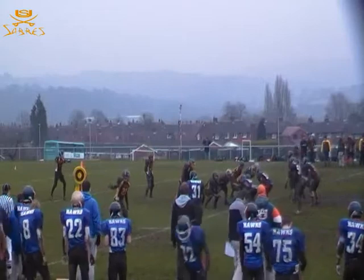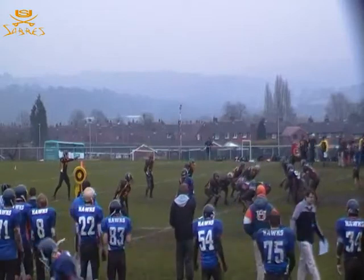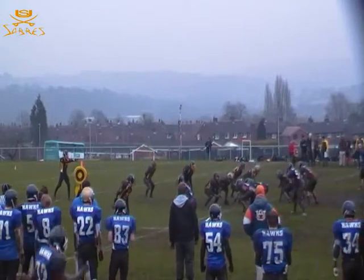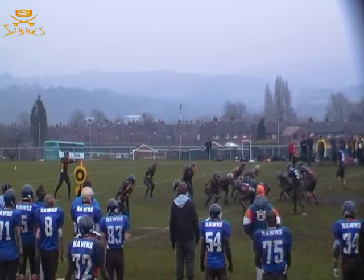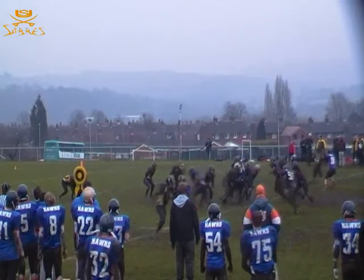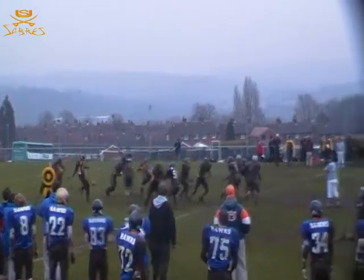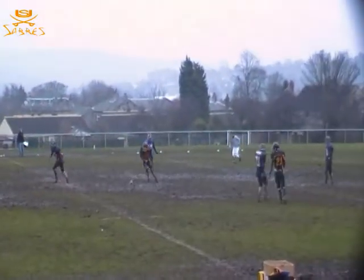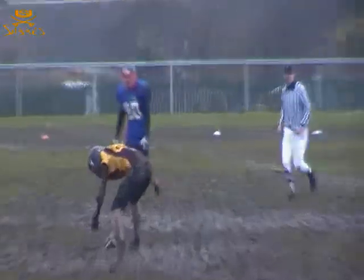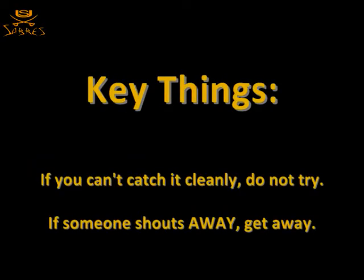The third option is to deliberately leave the ball. If you do this you must tell your teammates by shouting 'away'. Remember, if the ball touches yourself or a teammate the punting team can recover it, so if you do leave the ball everyone must get as far away as possible. Leaving the ball is generally the best option when you are near your own goal line. Remember, if the ball bounces into the end zone, which it normally will, you get the ball on your own 20.